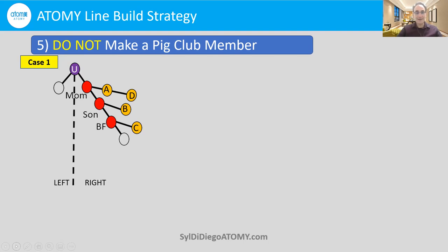Now, why might I have done it? Well, several reasons people do this. One, they wanted to motivate mom and the son to get involved with the business. And so they thought that if they put some people on the right side, they could get a $60 check, and if they got a $60 check, they would open up their mind to work to make income. Unfortunately, this is a practice that some people do, but it's very short-sighted for many reasons.